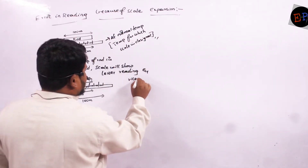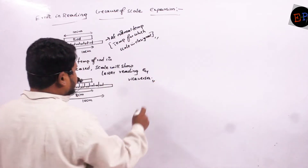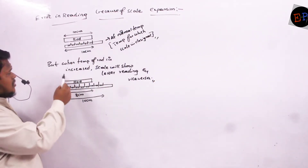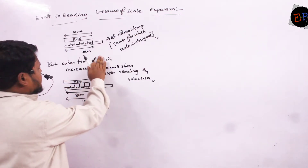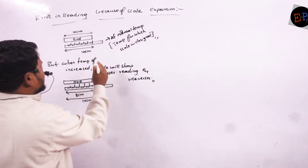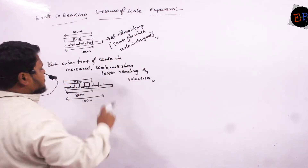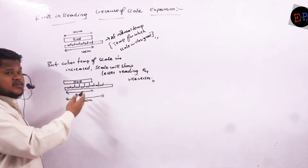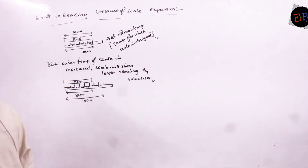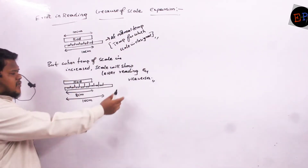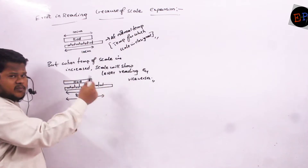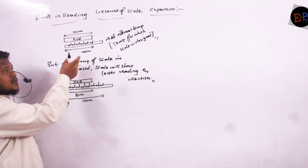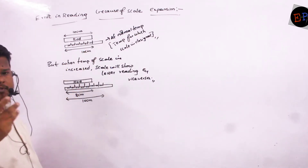And vice versa — vice versa means the exactly opposite statement. When the temperature of the scale is reduced, then what will happen? Instead of showing 10 cm, it may show 12 cm. So let us write that case also.